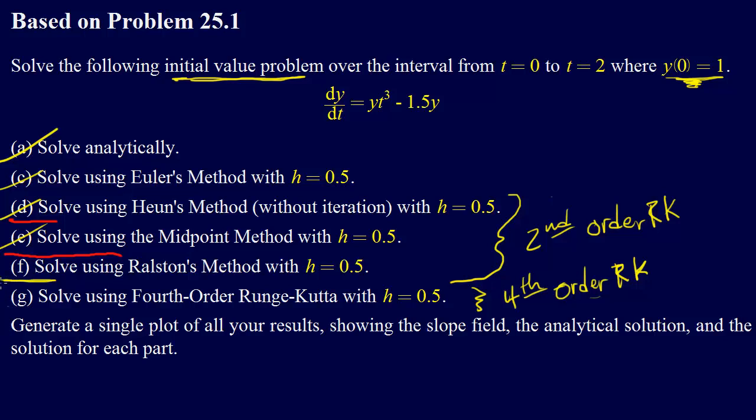All right, so we've gone through, we've gone all the way through Ralston's methods. Fourth order Runge-Kutta, it's just crunching through some numbers to get the coefficients.